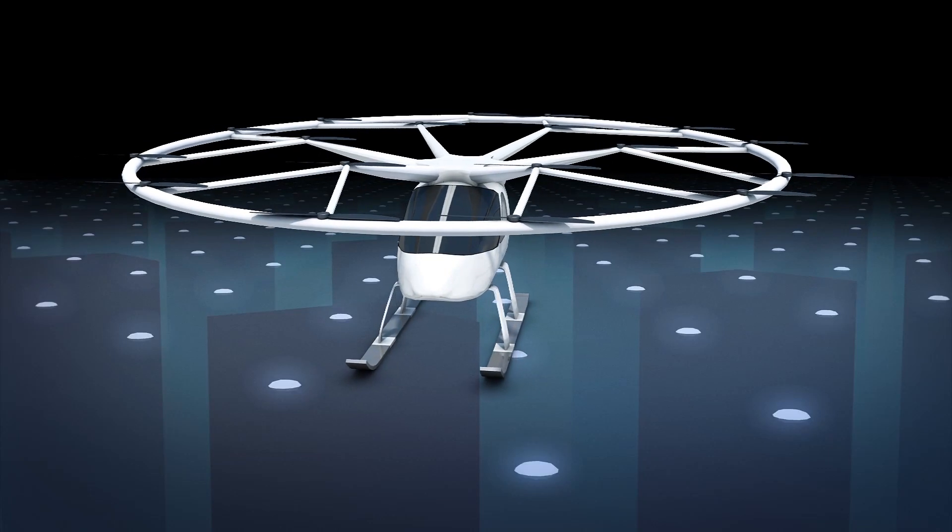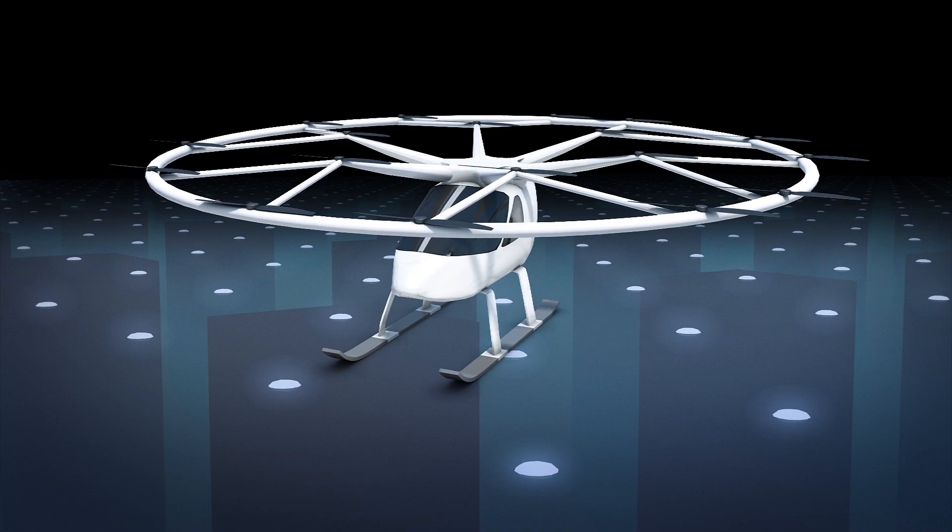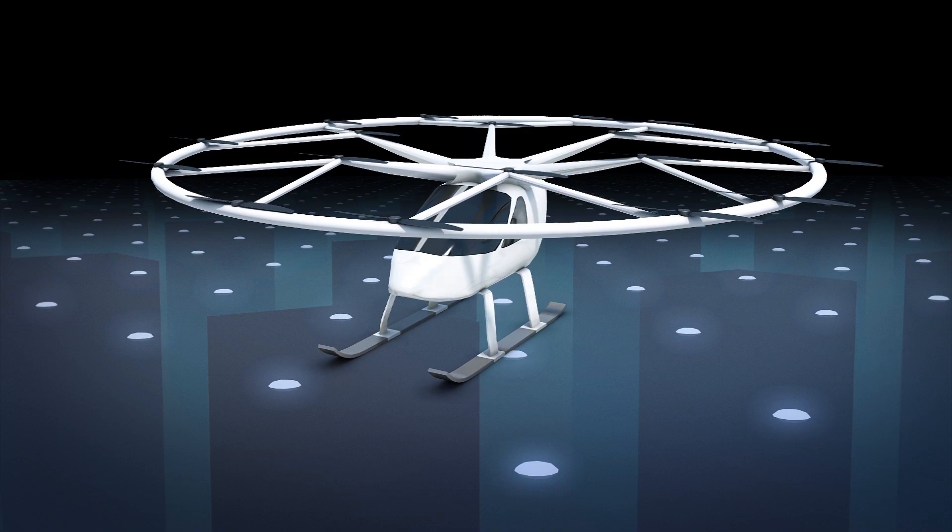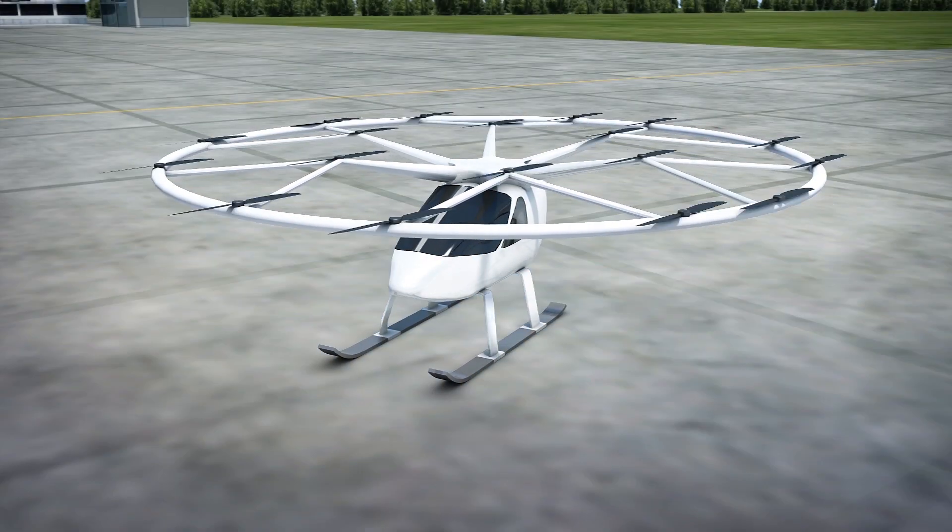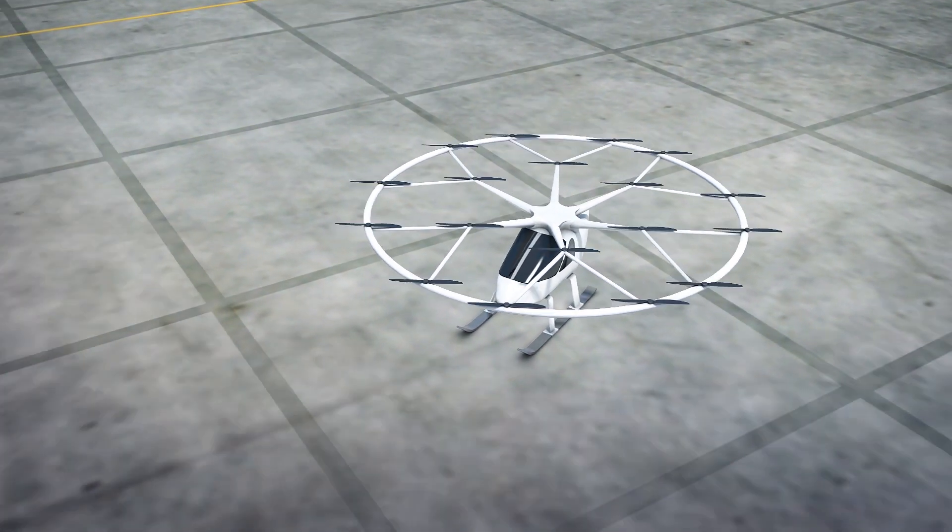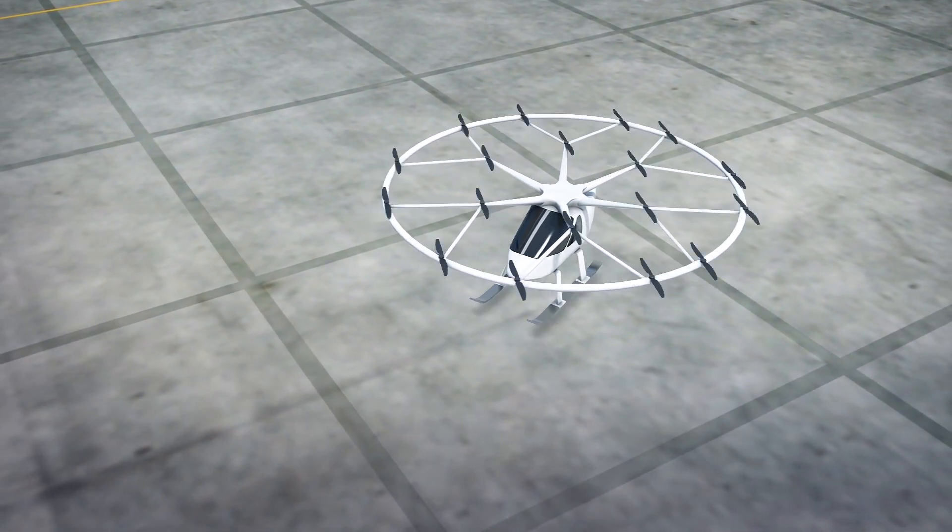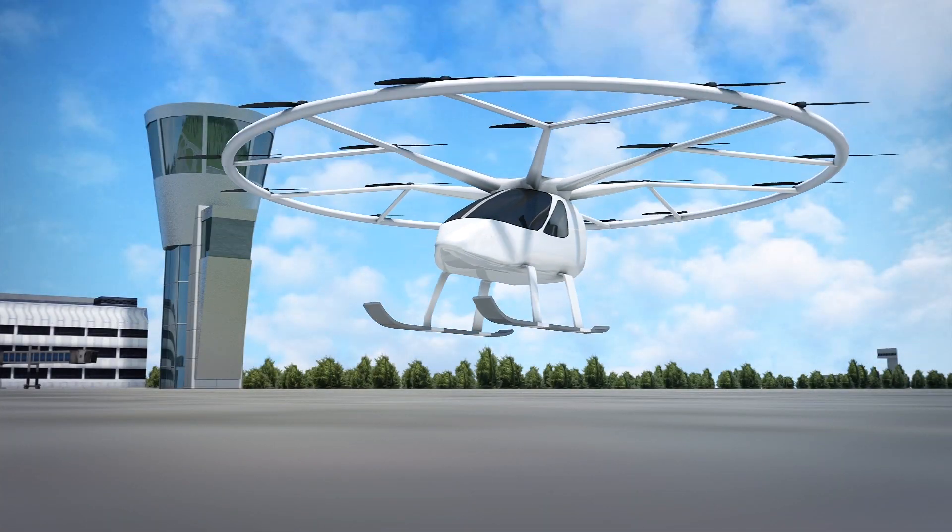German aviation startup company Volocopter has successfully performed a test flight at Helsinki Airport on August 29. The company used the Volocopter 2X, its second-generation flying electric vehicle, which has 18 propellers and takes off and lands vertically to perform the test flight.